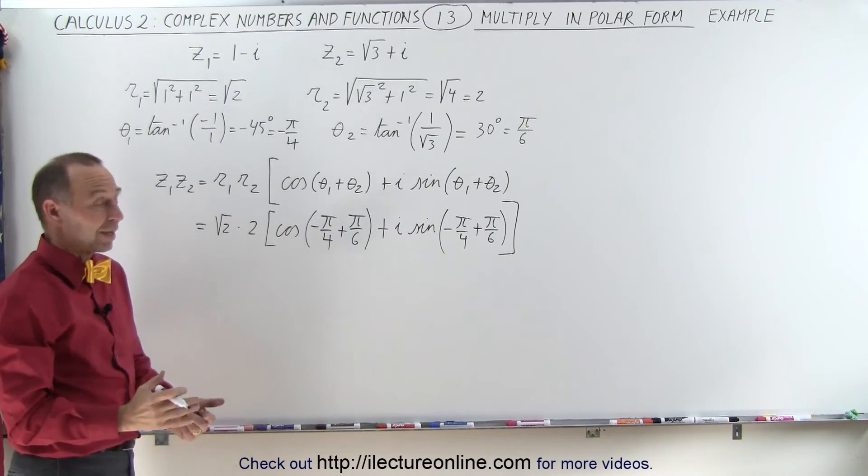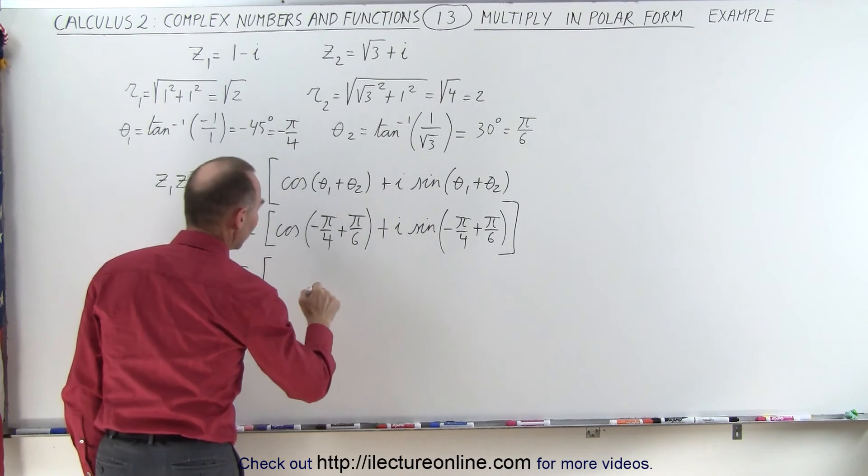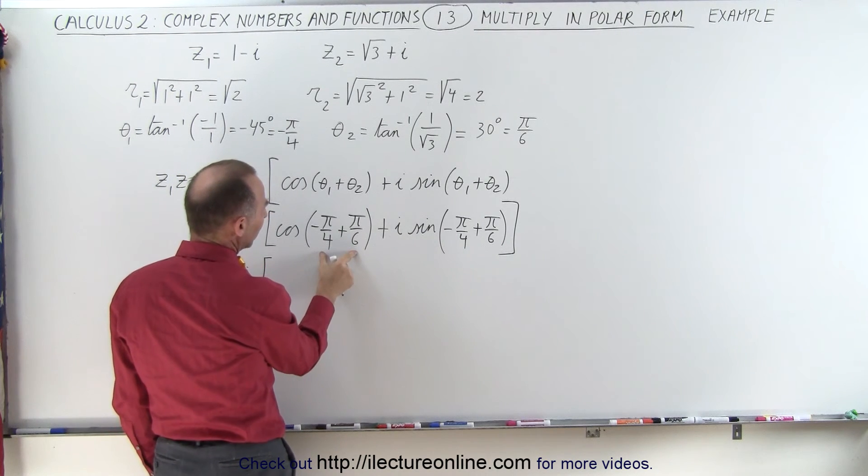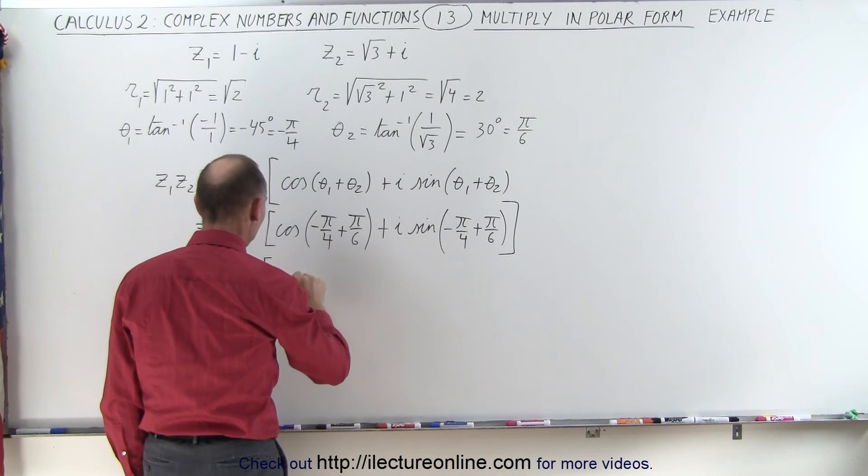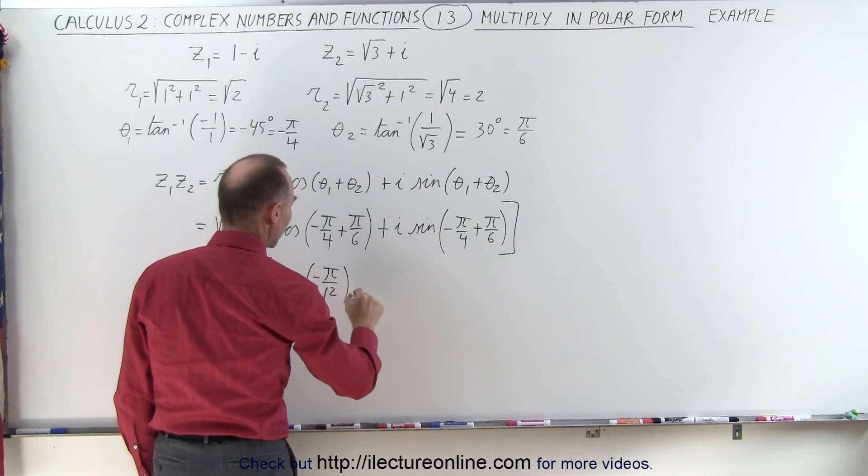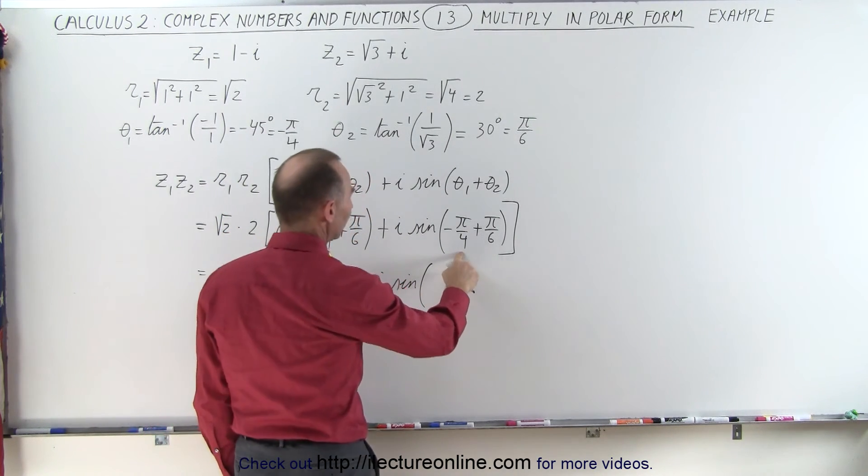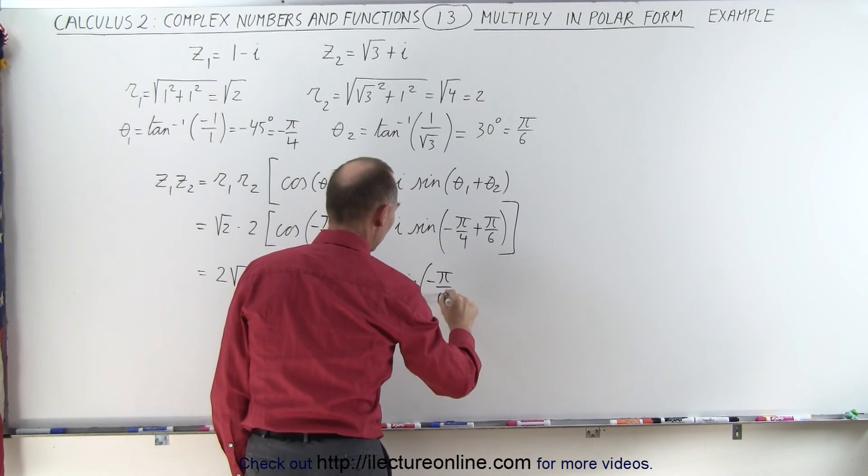Now we need to simplify that, and that looks as follows: this is 2 times the square root of 2 times—well we have minus pi over 4 plus pi over 6, common denominator is 12, that's minus 3 plus 2—so this becomes the cosine of minus pi over 12 plus i times the sine of, and again that should be the same, that would be minus 3 plus 2 or minus pi over 12.